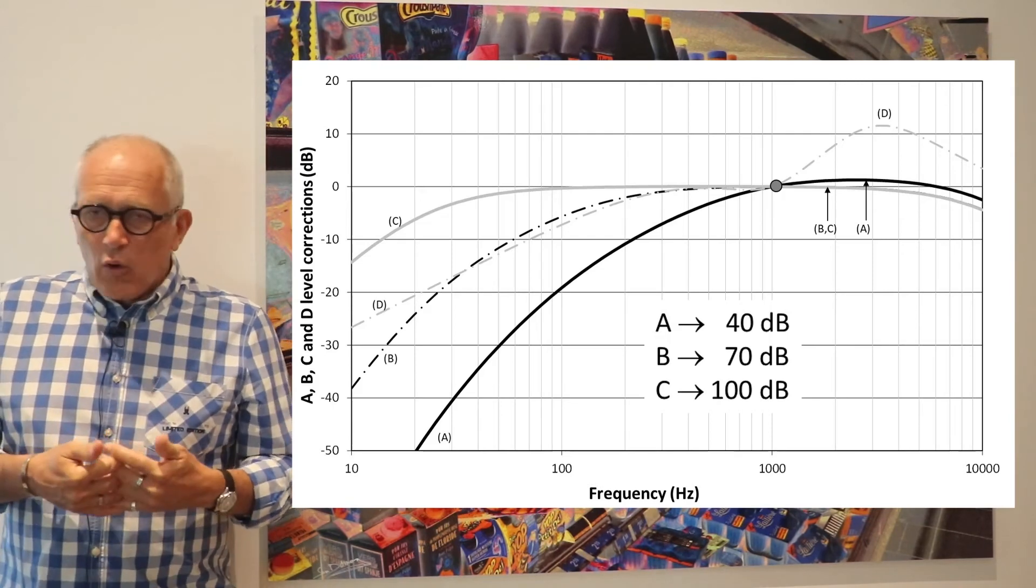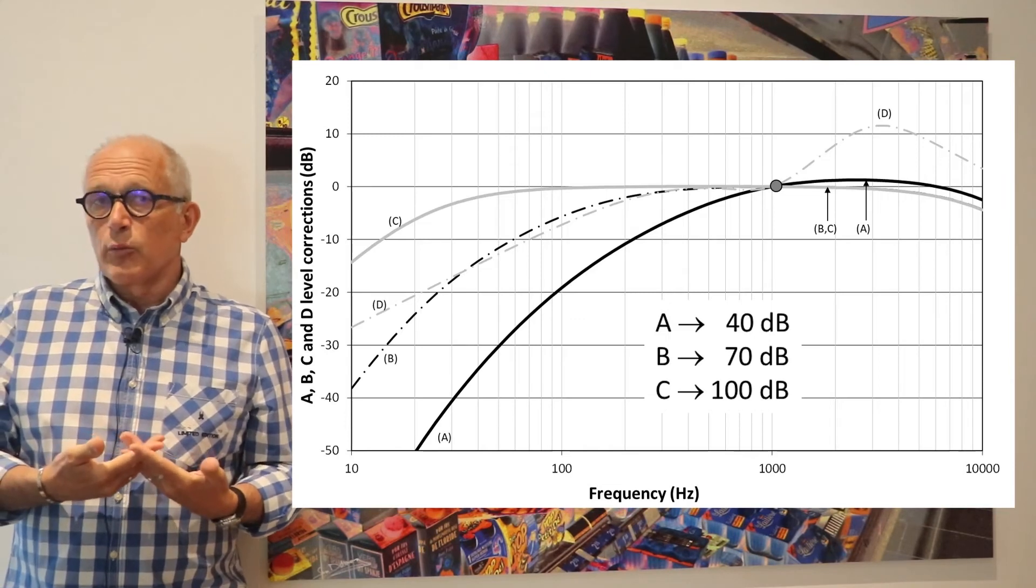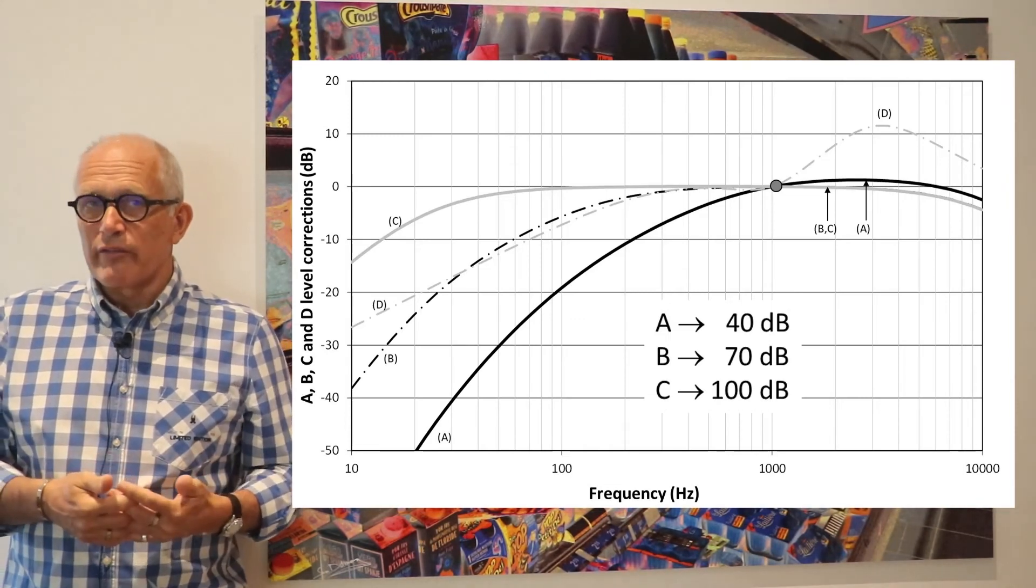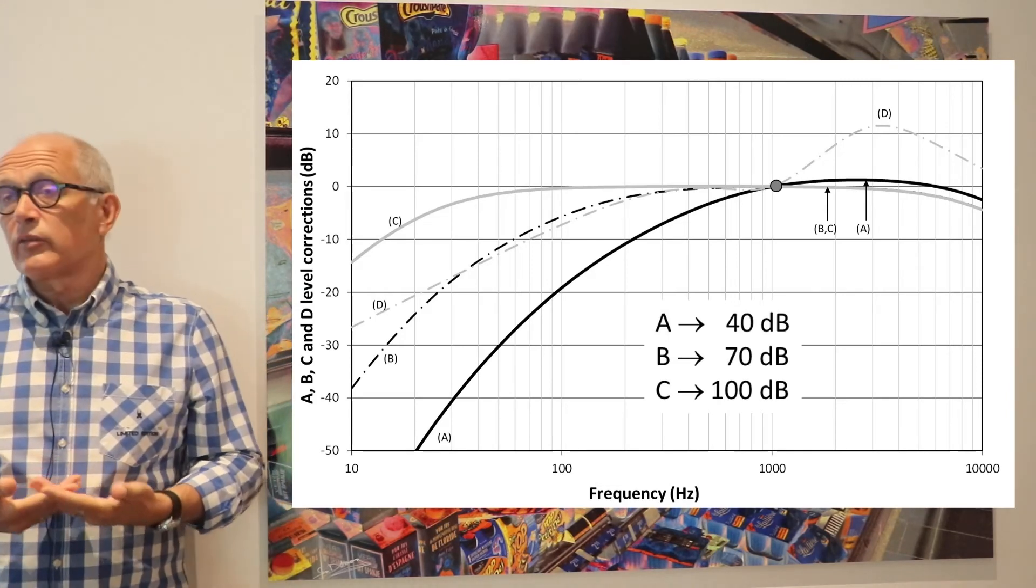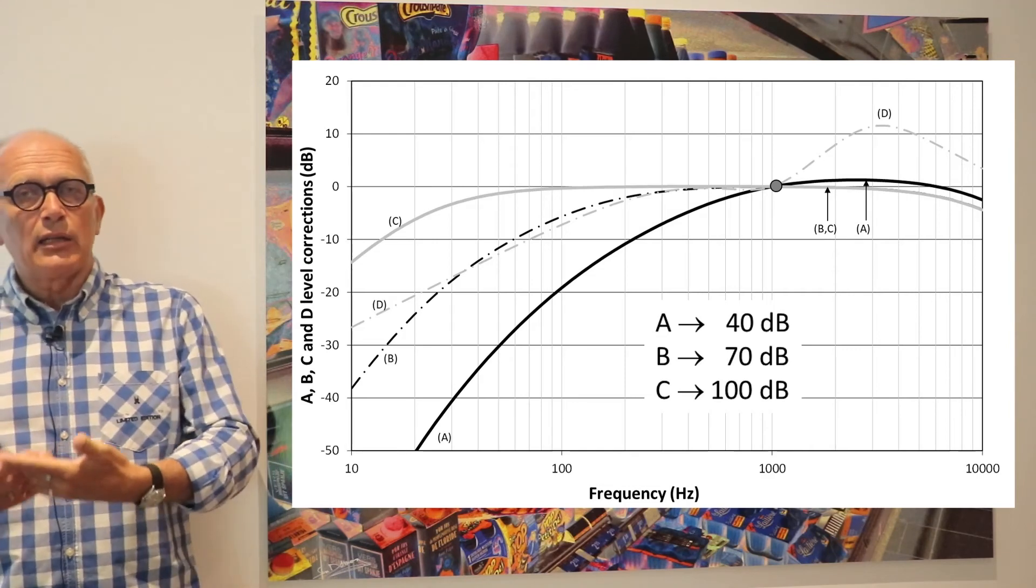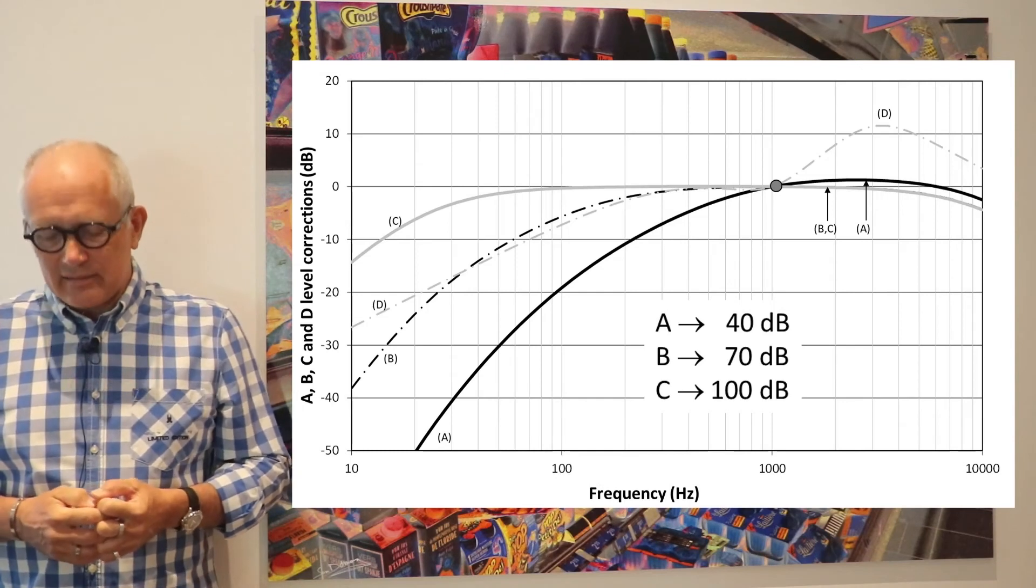Unfortunately over time, because people like simple things, it's the A filter that has become the reference and that is used more or less whatever the level is, which is not absolutely correct. But at least people are now familiar with the DBA scale, which takes into account that filter.